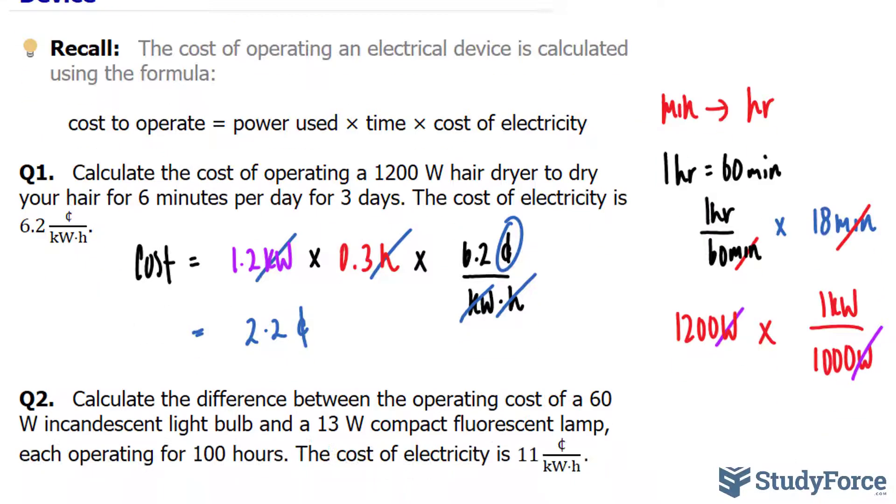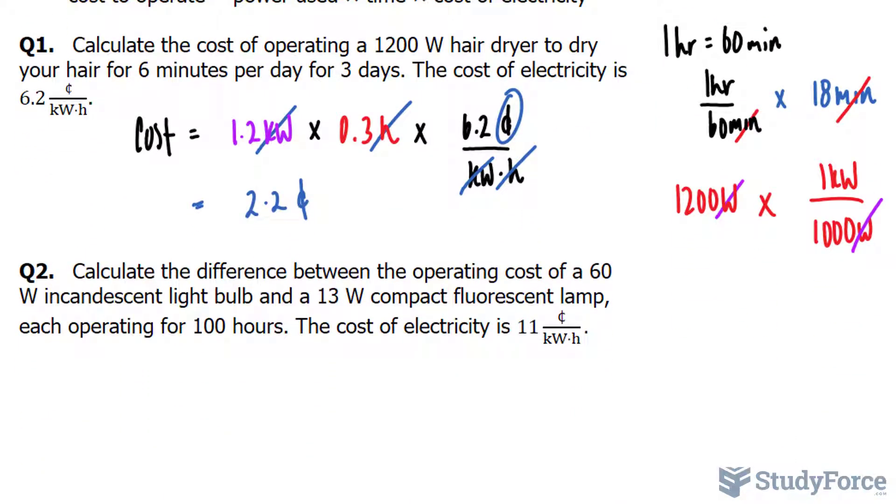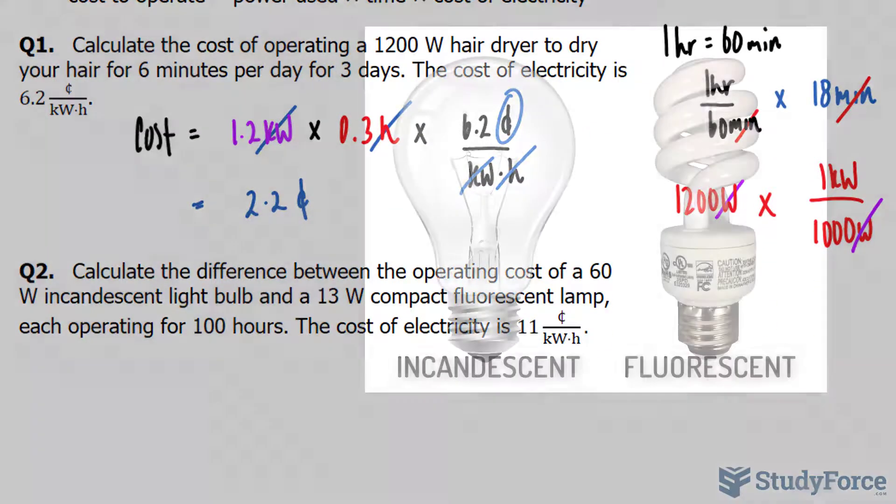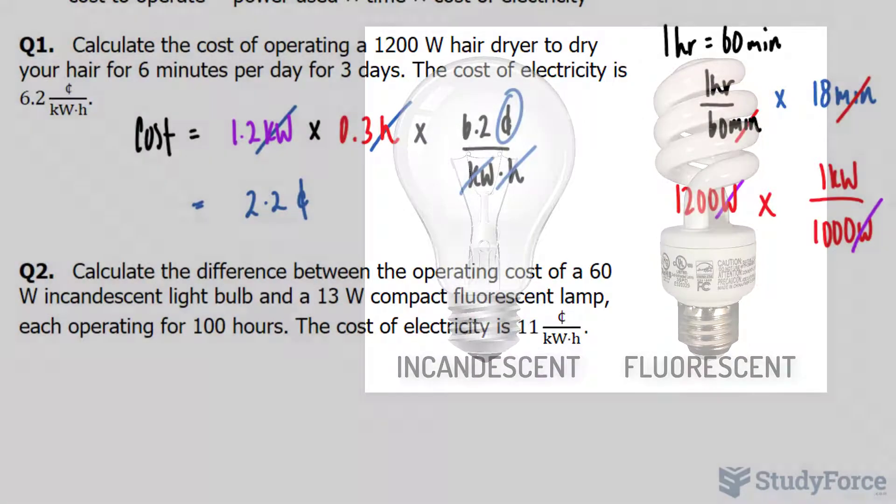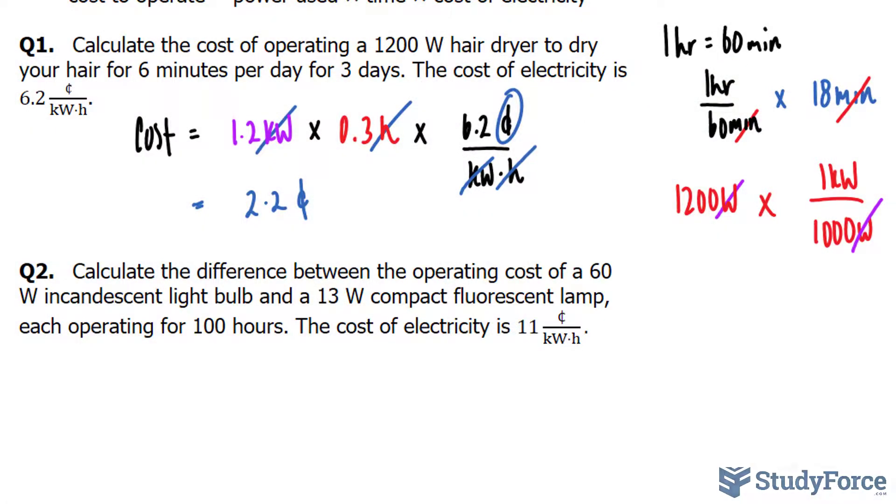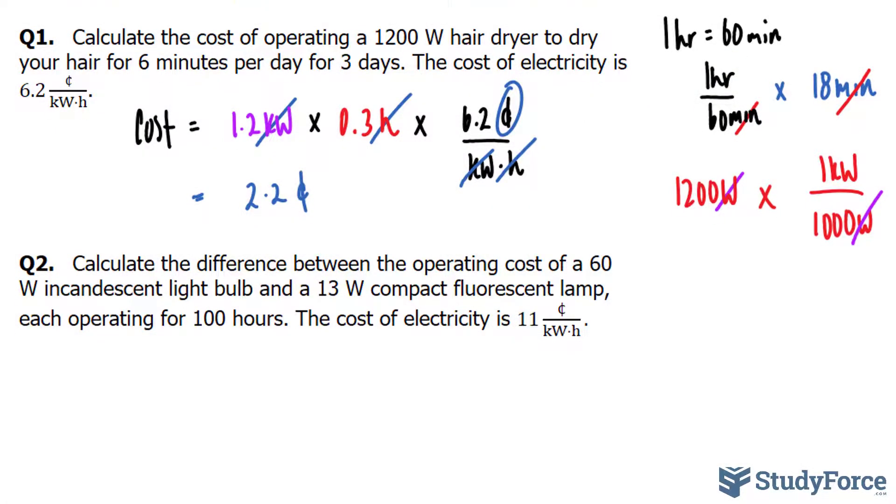Let's move on to the next question. Calculate the difference between the operating cost of a 60 watt incandescent light bulb and a 13 watt compact fluorescent lamp, each operating for 100 hours. The cost of electricity this time is 11 cents per every kilowatt hour.